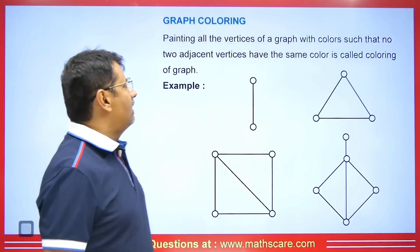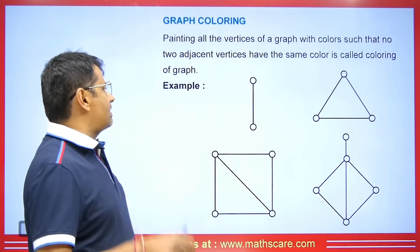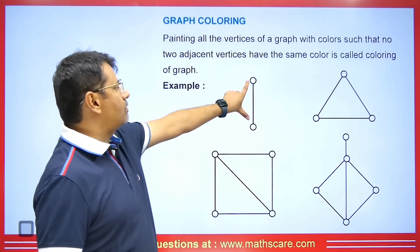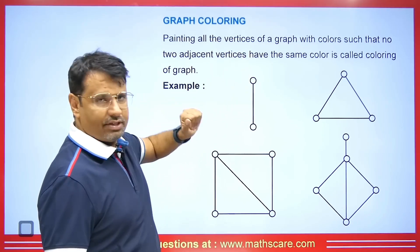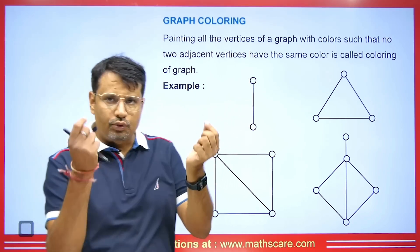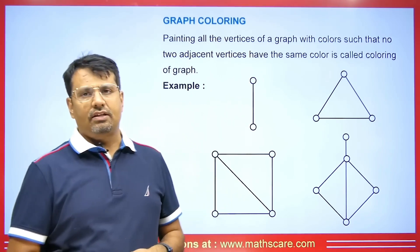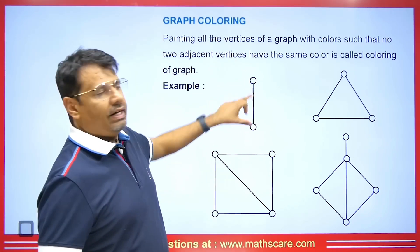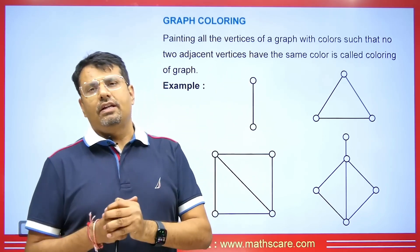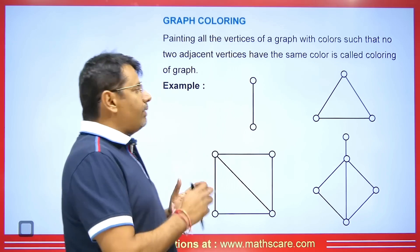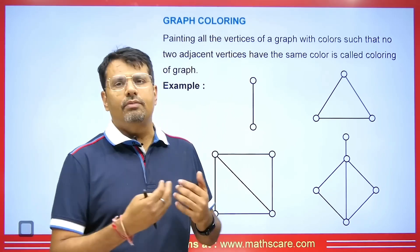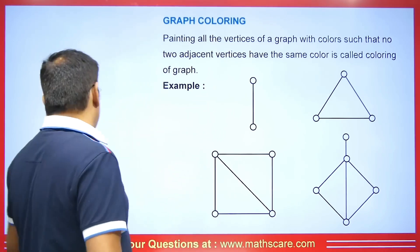Coloring all the vertices of a graph with colors such that no two adjacent vertices have the same color is called a coloring of a graph. Now let us consider a graph where two vertices are connected by an edge. If one vertex is colored, any adjacent vertex must be assigned a different color, as they are connected by an edge. This is where the concept of chromatic number comes from.